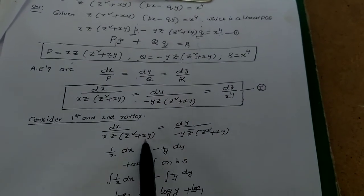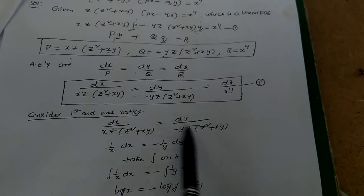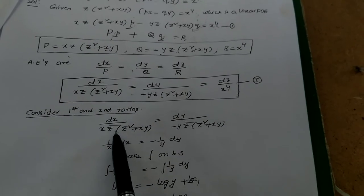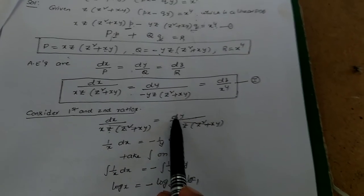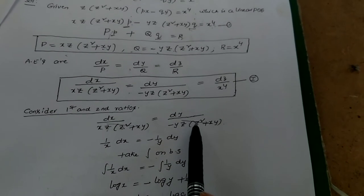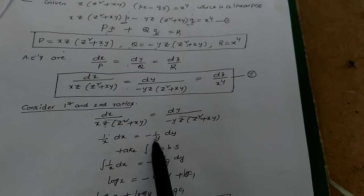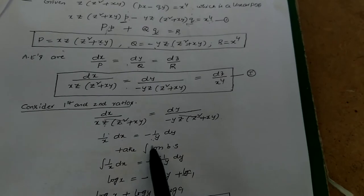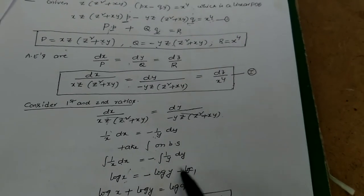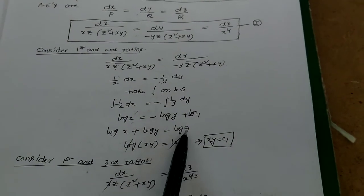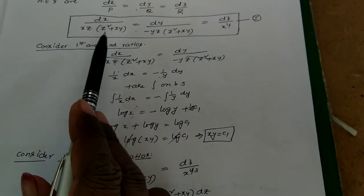From dx by xz into z squared plus xy equal to dy by minus yz into z squared plus xy, we can cancel z into z squared plus xy from both denominators, giving 1 by x dx equal to minus 1 by y dy. Taking integrals: integral of 1 by x is log x, integral of 1 by y is log y, so log x plus log y equal to log c1, giving log xy equal to log c1, and therefore xy equal to c1. This is the first solution.